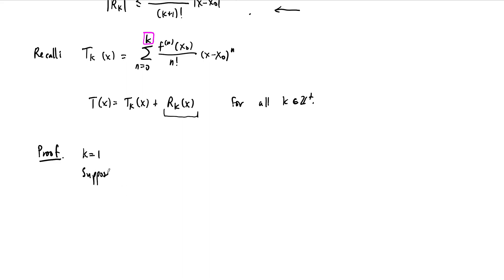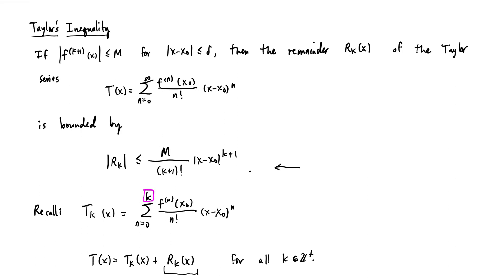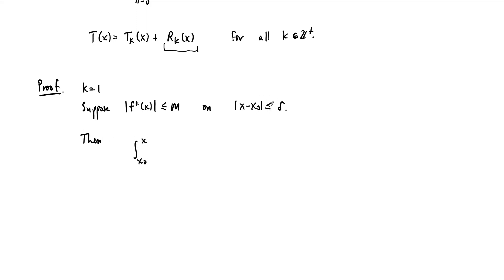For this proof, let's suppose that k is equal to 1. And suppose that the second derivative — since if k equals 1 the remainder theorem tells us the remainder is bounded by the next derivative — so we'll assume that f double prime of x is less than or equal to M on some interval centered at x naught with length less than or equal to delta. Then what we're going to do is apply the fundamental theorem of calculus to some integrals.